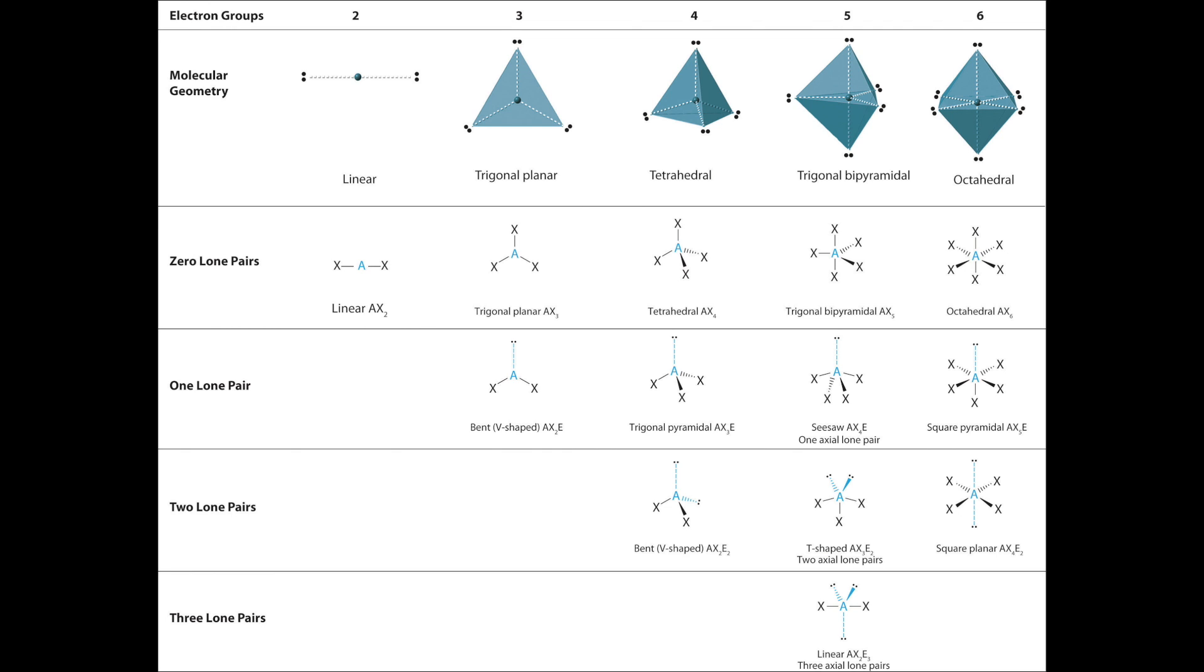A molecule with five electron groups can have a trigonal bipyramidal, seesaw, T-shaped, or linear molecular geometry, depending on the number of lone pairs. However, it is important to note that the placement of electrons is important in order to minimize electron-electron repulsion.